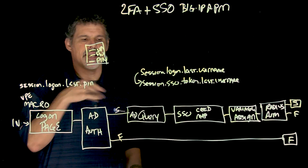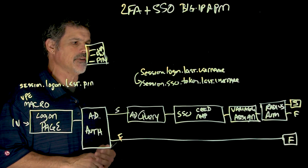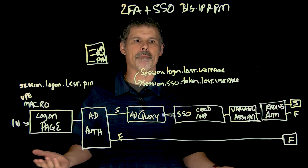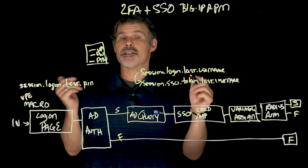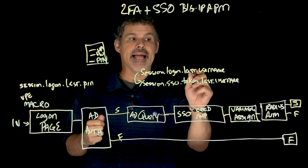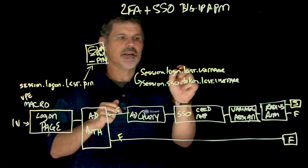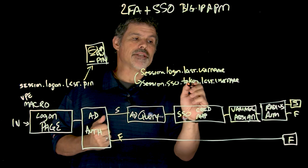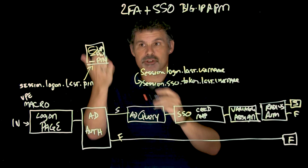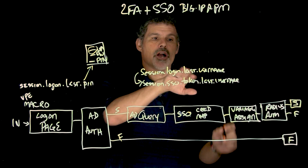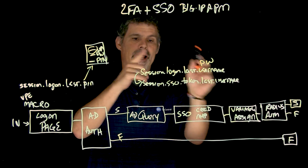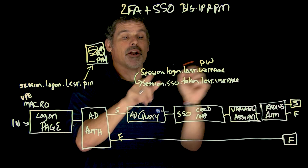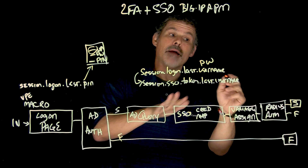He'll then be able to authenticate the user, do an AD query, and find out what's going on with the individual. A couple of key pieces within this solution: first, the single sign-on credential map. What this does is take the session variable session.logon.last.username and recreate it as session.sso.token.last.username. We do the same thing with logon.last.password, which also converts in the credential mapping to session.sso.token.last.password — so we map both the username field and the password field.